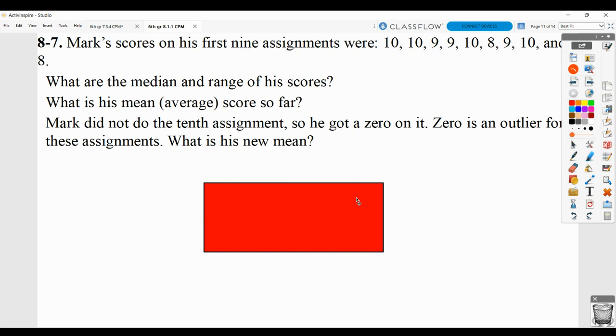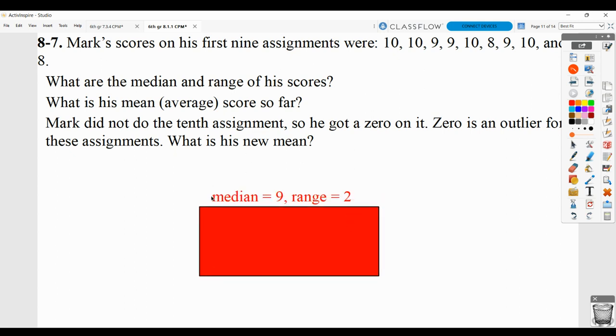Make sure you're showing your work. You need to first list the numbers in order from least to greatest and then find the middle value, which is 9. Don't just have the median as 9, show that you've put them in order and found the middle. The range is the difference between the largest and smallest, so 10 minus 8 giving you 2.